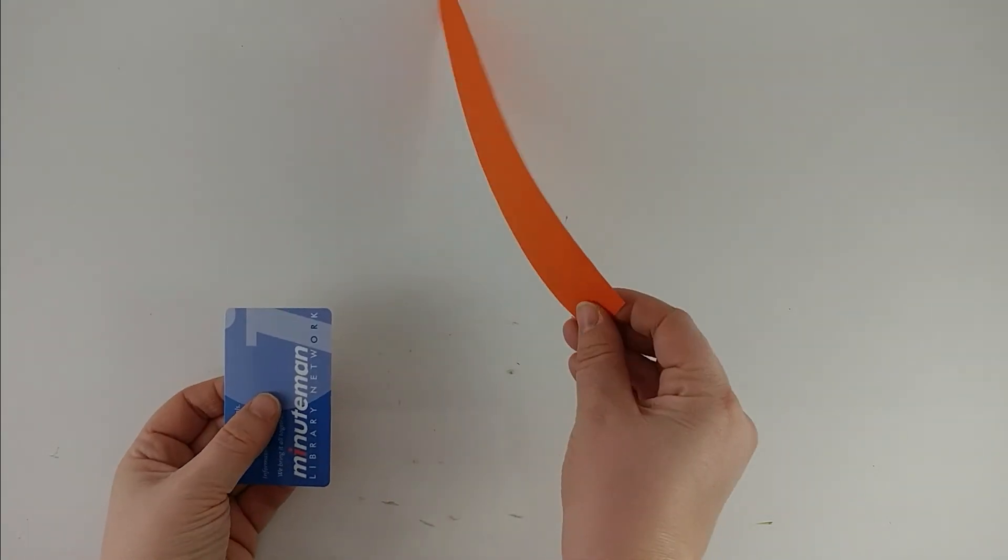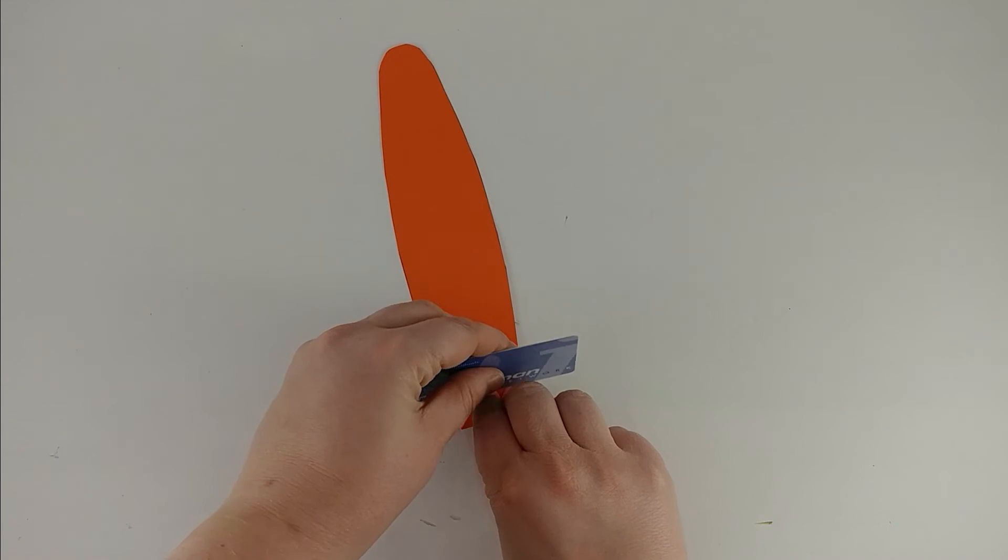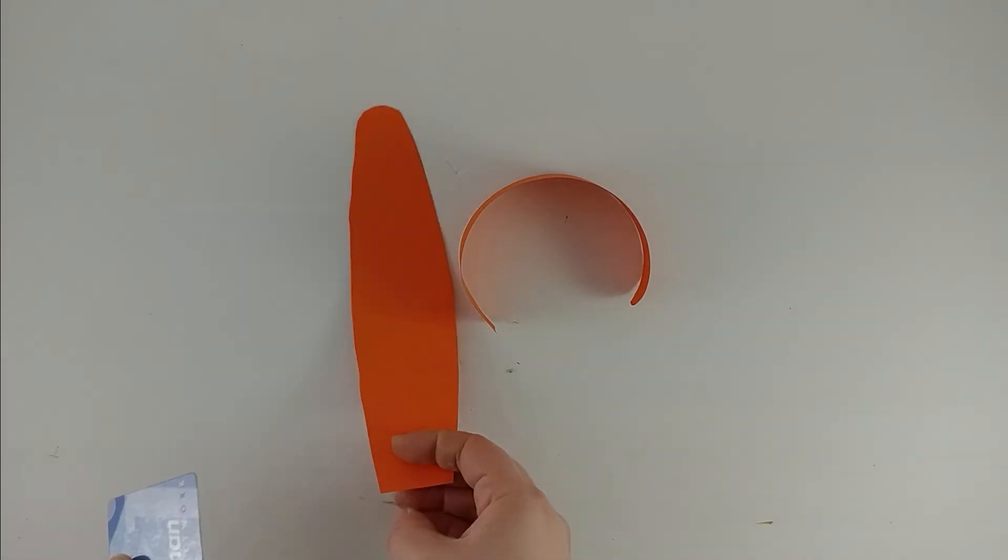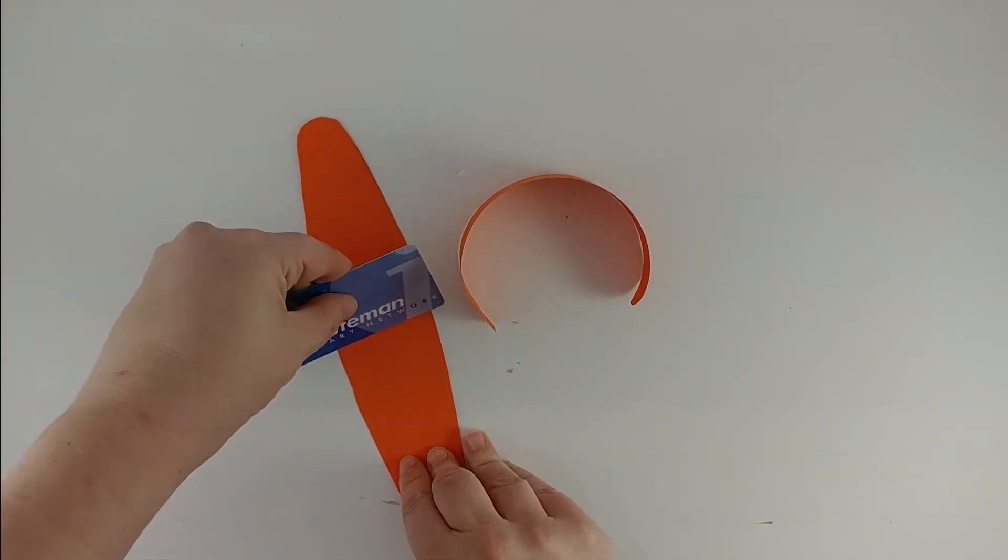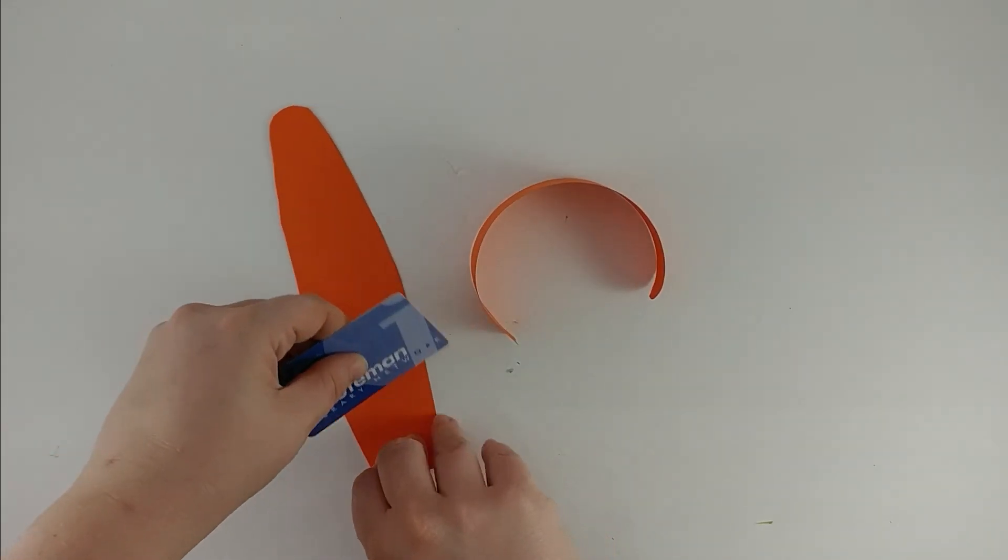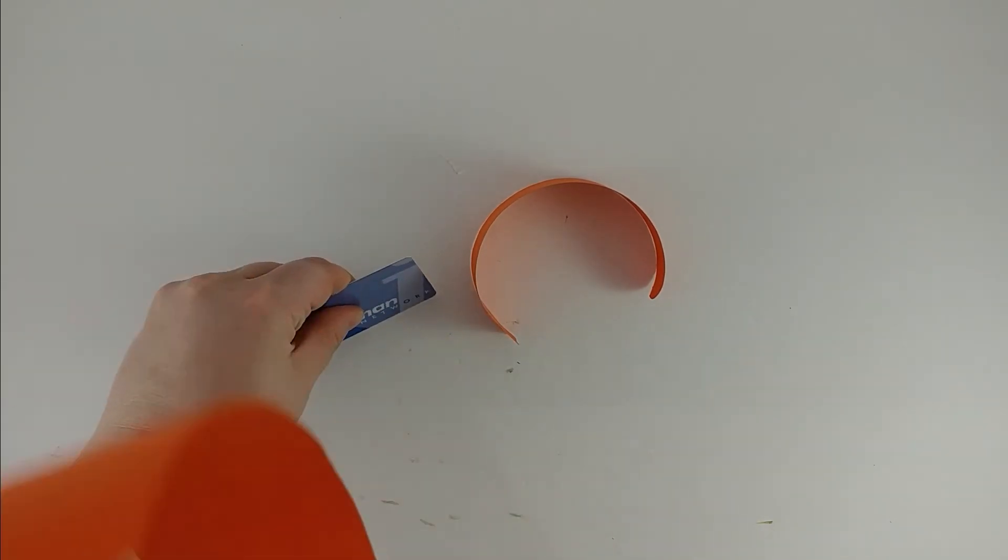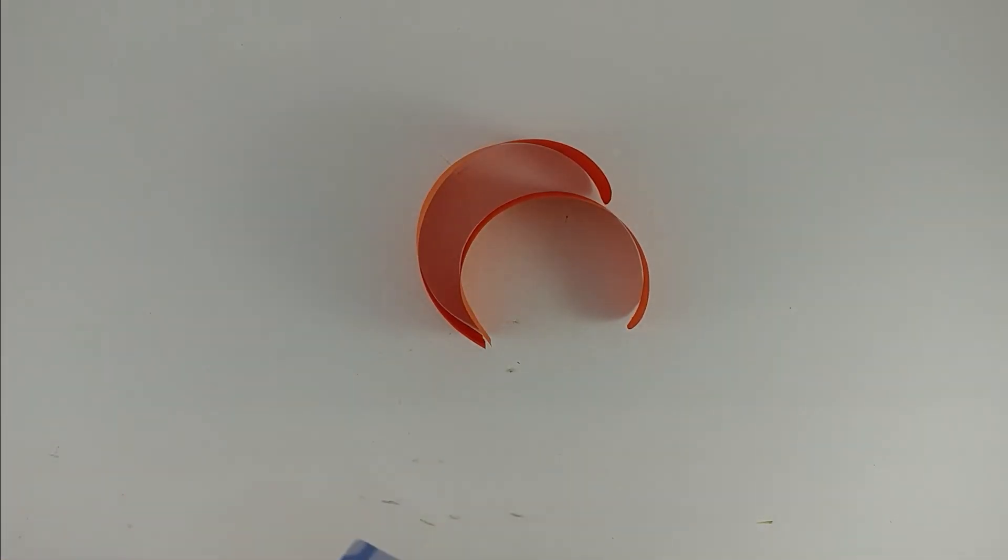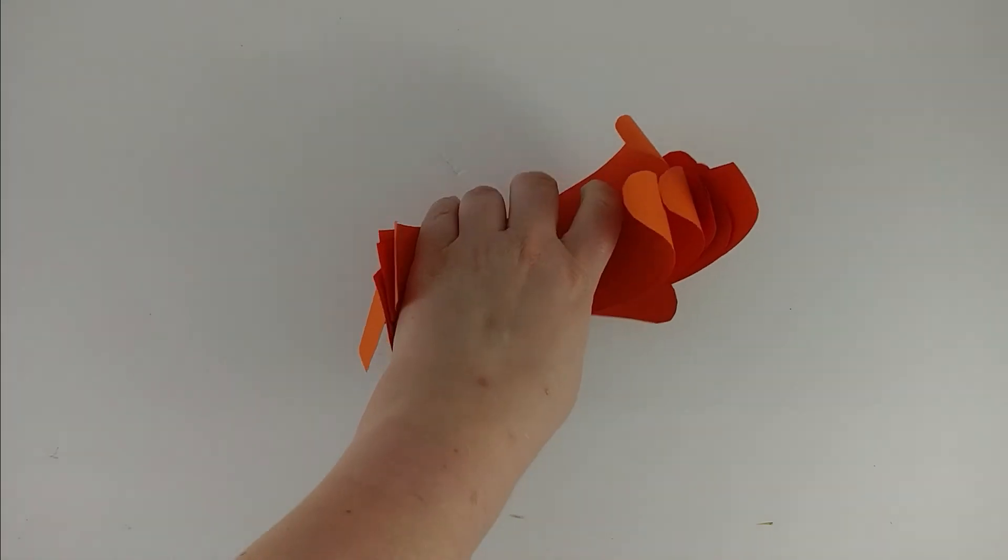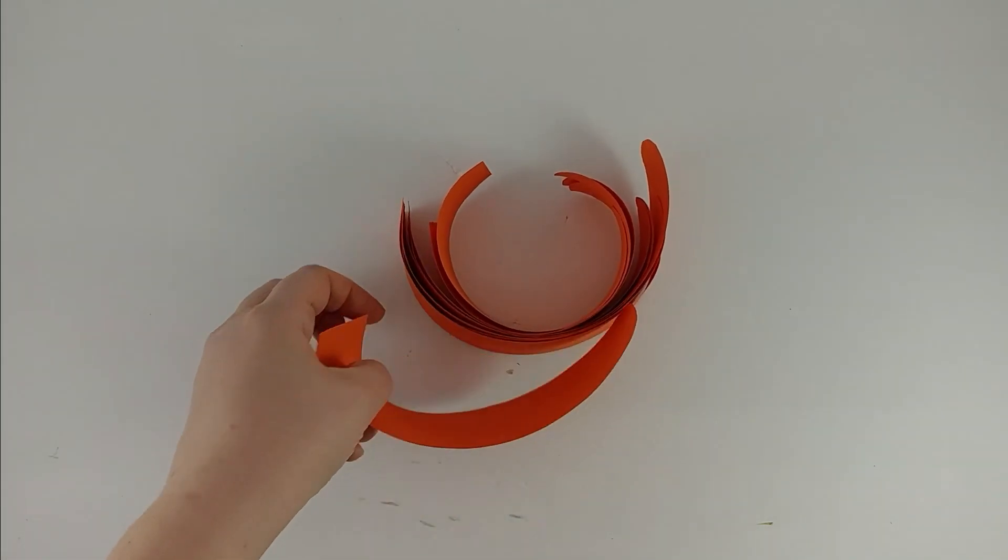I am curling my chrysanthemum petals with my library card. I'm just holding the bottom, and then one, two. Nice straight piece of paper, library card held at a slight angle, kind of like you were going to spread something off. One, two. I'm going to do that to the rest of the petals of this size. No harm done to my library card, I can still use it to check out books.